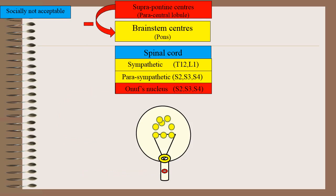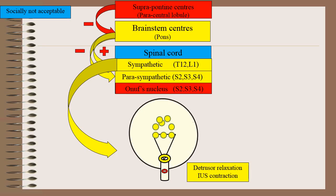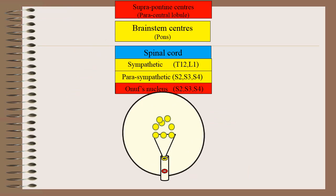At the same time, the suprapontine center gives inhibitory impulses to brainstem centers, and from the brainstem centers through the reticulospinal tract, it causes facilitation of the sympathetic and inhibition of the parasympathetic. The sympathetic center in turn causes detrusor muscle relaxation and internal urethral sphincter contraction. Thus, the bladder goes into a storage mode.